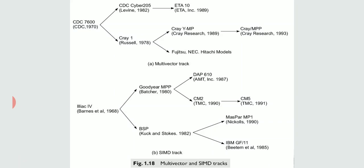So, multi-vector supercomputers and SIMD supercomputers are two separate tracks. Multi-vector started with CDC 7600 and SIMD started with ILLIAC 4. All these machines become case studies in later chapters. The fifth and sixth tracks are multi-threaded and data flow tracks.